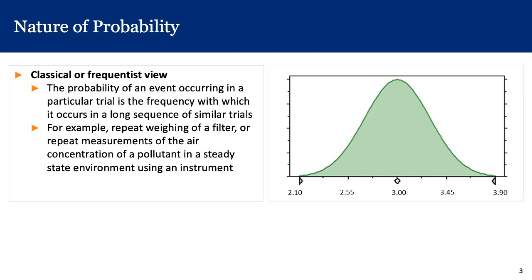The idea here is that this probability distribution is out there in nature, and we are just going and measuring it — whether observing heads in coin tosses or measuring the weight gain of a filter.